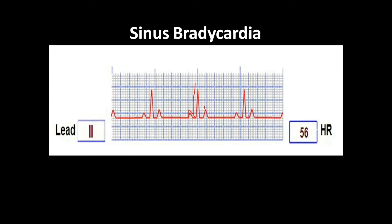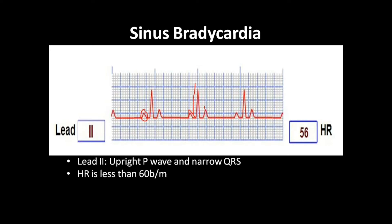If you see the heart rate is lesser than 60 — it is 56 beats per minute. The P wave is always upright in lead 2, and the QRS complex is narrow as usual in a sinus rhythm. The heart rate will be lesser than 60 beats per minute.